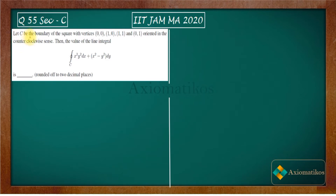Let C be the boundary of the square with vertices (0,0), (1,0), (1,1), and (0,1), oriented in the counterclockwise sense. Then we have to find the value of the line integral over C, which is the boundary of this square.